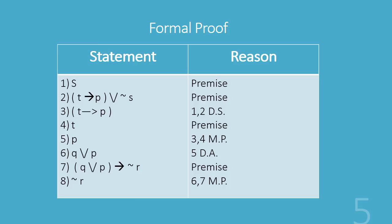Once we have the p we can add on the q to get q or p and that's by DA. So we took step five and used DA to get q or p. We now bring in the last premise, the q or p implies not r. And with the q or p we can then conclude not r by six and seven modus ponens.